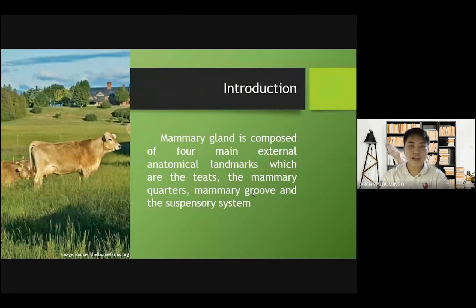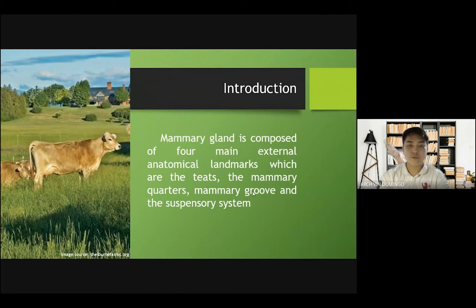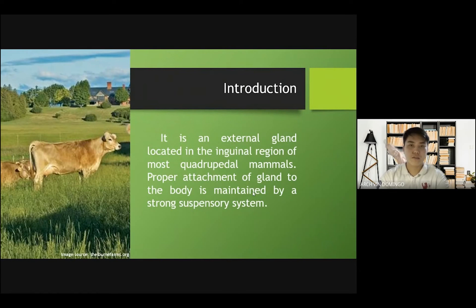Introduction. The mammary gland is composed of four main external anatomical landmarks, which are the teats, the mammary quarters, the mammary groove, and the suspensory system. It is an external gland located in the inguinal region of most quadrupedal mammals, such as the cows.